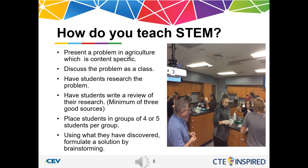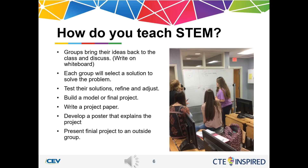Using what they discovered, they formulate a solution by brainstorming. Together in their groups, they come up with a number of ideas that will solve the problem they are working on. Once the groups have gathered their ideas during brainstorming, we bring the class back together and on the whiteboard, we let one person from each group come up and write down the solutions they've come up with. We discuss those solutions and determine which are the best, then each group will select a solution to solve the problem.